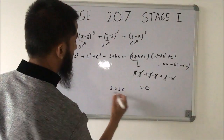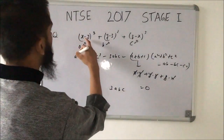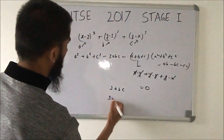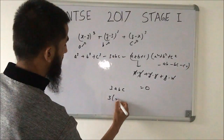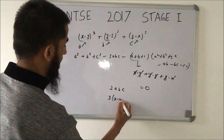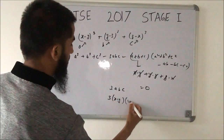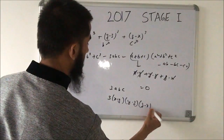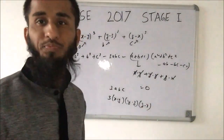So the answer is 3abc = 3(x−y)(y−z)(z−x).